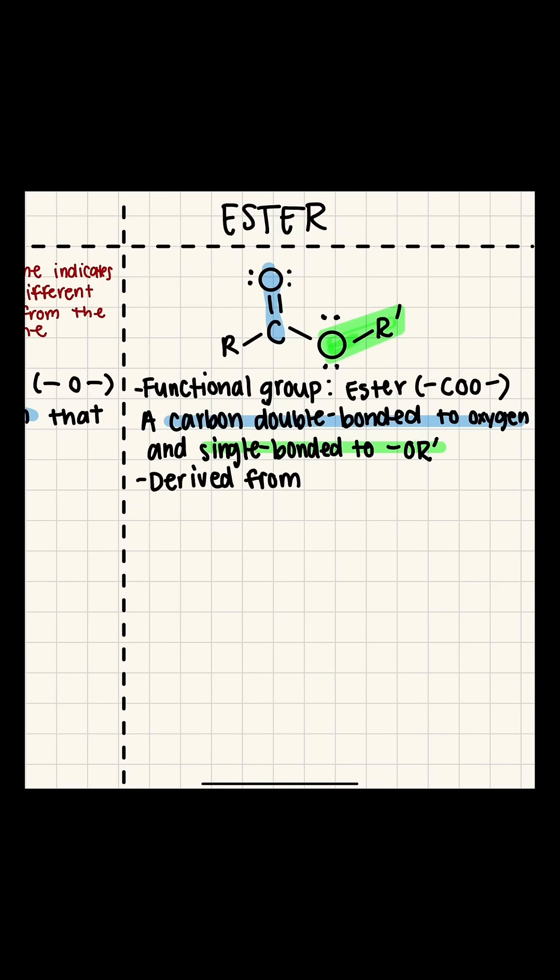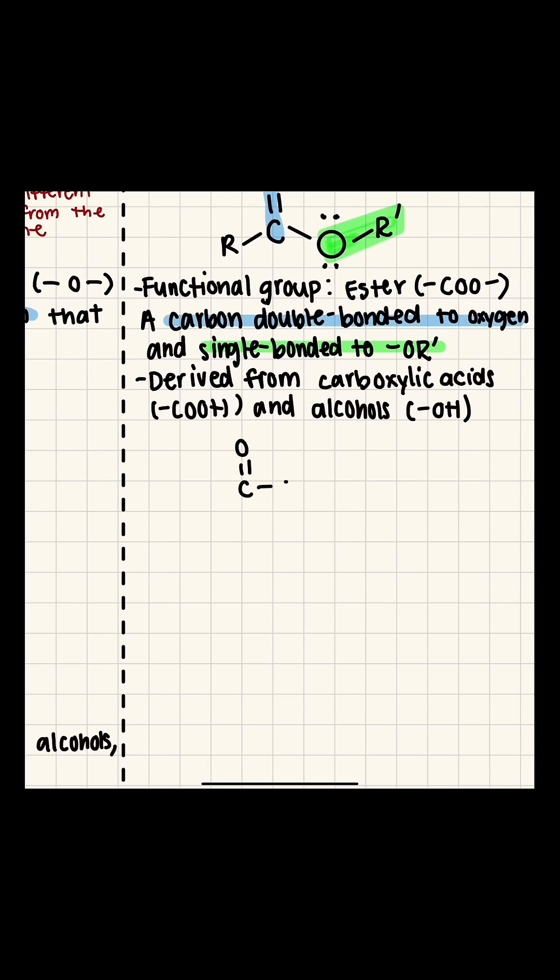Esters are formed from carboxylic acids and alcohols, and a well-known example is ethyl acetate. And structurally, we see that COO core. That's the ester functional group.